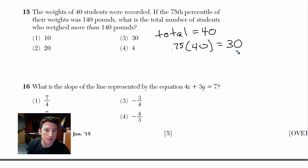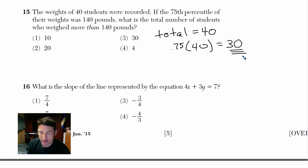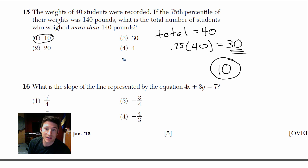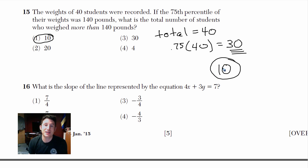The 75th percentile of their weights was 140 — what is the total number of students who weighed more than that? We know 30 students were at 140 or less, so how many are left over? 40 minus 30 equals 10. So 10 students weighed more than 140. Just multiply the percentile times the total, then subtract from the whole.